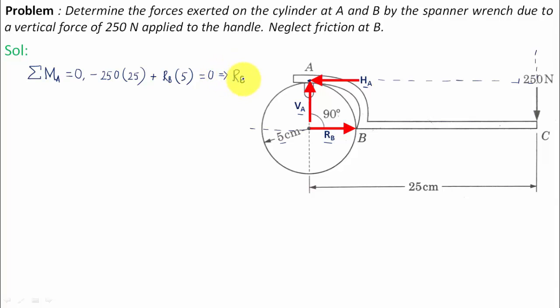Now we need to calculate the values of VA and HA. I'm going to use summation of all forces in y direction equals zero. VA is pointed upwards, so it's positive, and 250 is downwards, so it's negative. Hence the value of VA equals 250 Newtons.